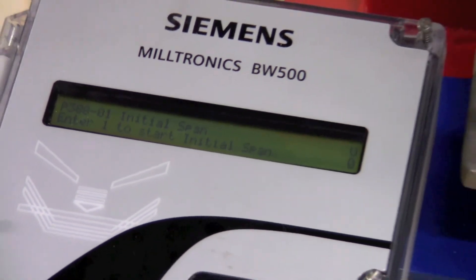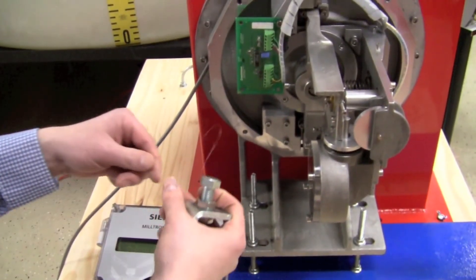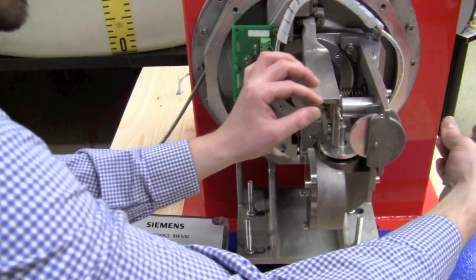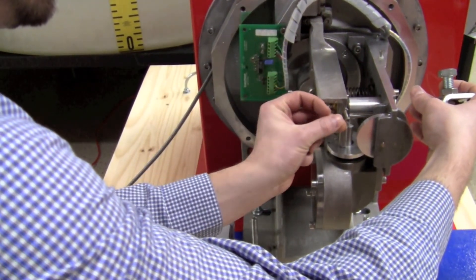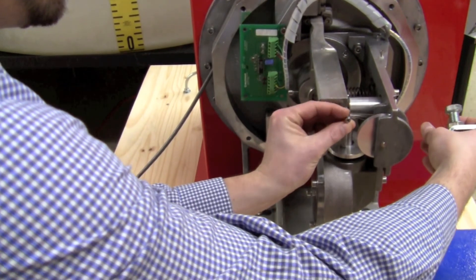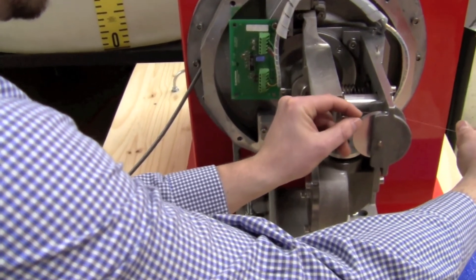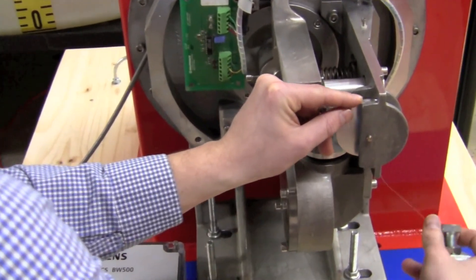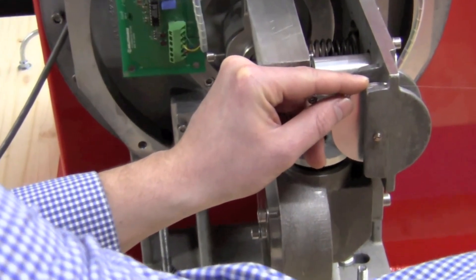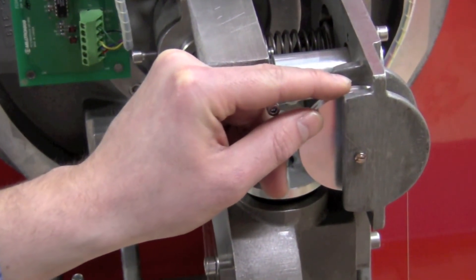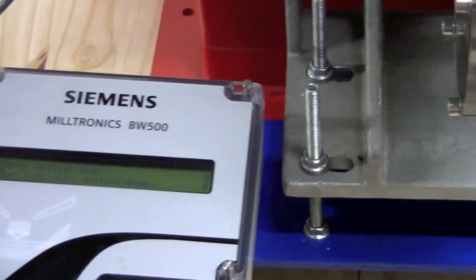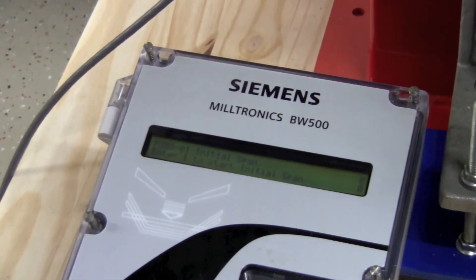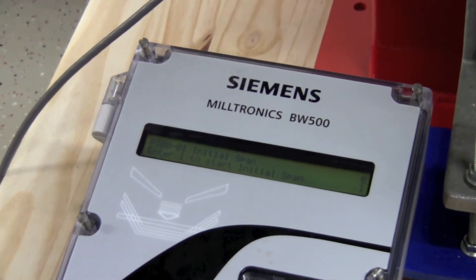When doing the initial span, you'll need to hang your test weight. The test weight will be hung on this hook and across this pulley. On the integrator, you will need to press one to begin your span.